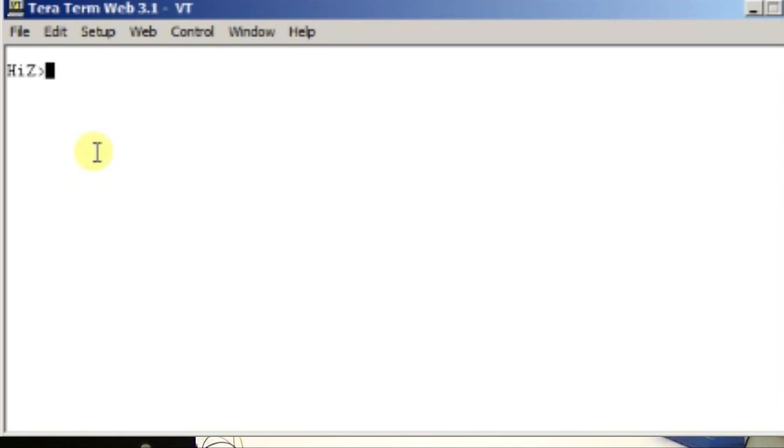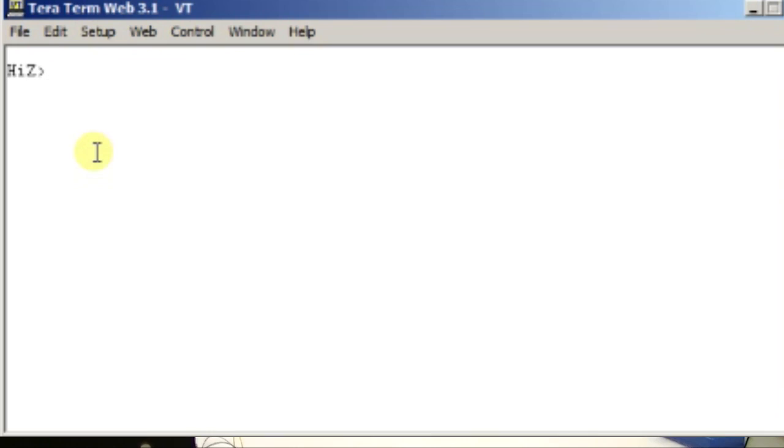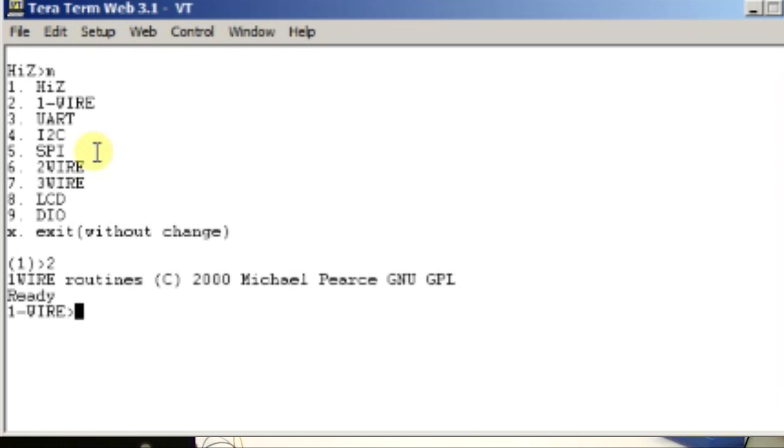Now in the terminal we're already in high impedance mode, that means it's a safe mode where there are no power supplies on, nothing's going in or out of the Bus Pirate. So first we'll go into a mode, any mode, it doesn't matter, we'll choose one wire mode, a capital W to turn on the power supplies.